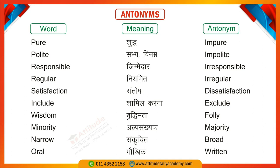Next is 'Satisfaction' and its antonym 'Dissatisfaction.' Then 'Include,' meaning to add or involve, and 'Exclude,' meaning to leave out. Next is 'Wisdom,' meaning intelligence or good judgment, and its opposite 'Folly,' meaning foolishness. Then 'Minority' and 'Majority' — for example: There are many castes which are in minority in India. Next is 'Narrow,' and its opposite is 'Broad.' Some people are very narrow-minded and some are broad-minded.